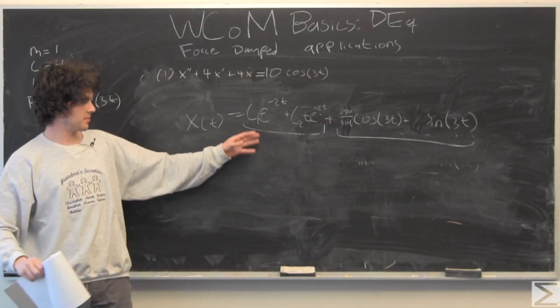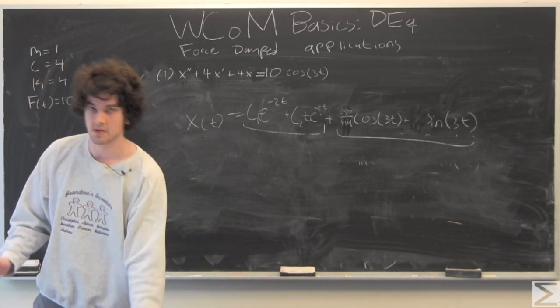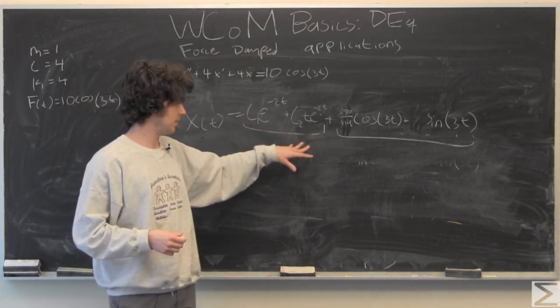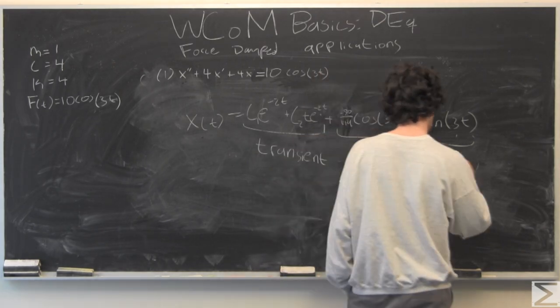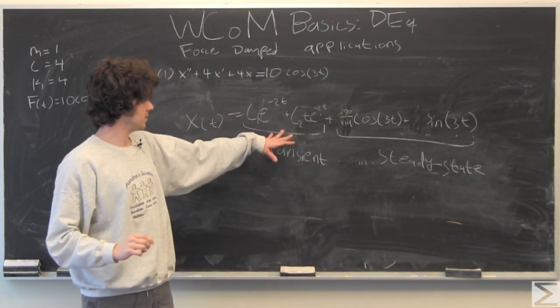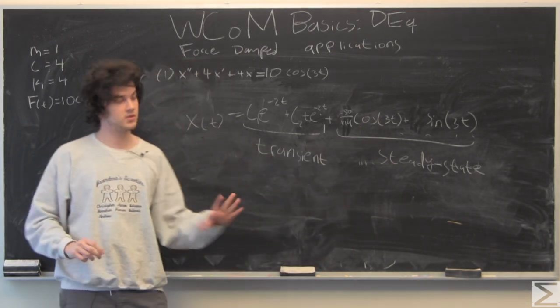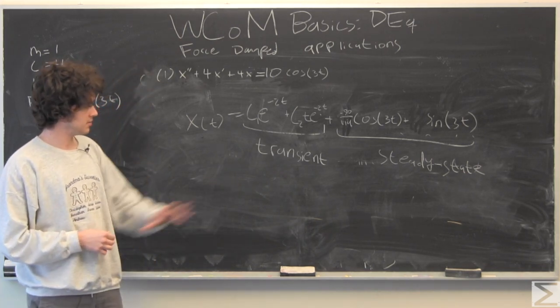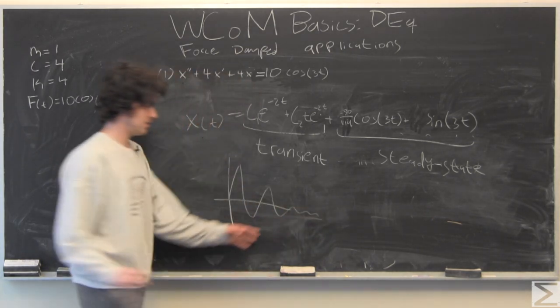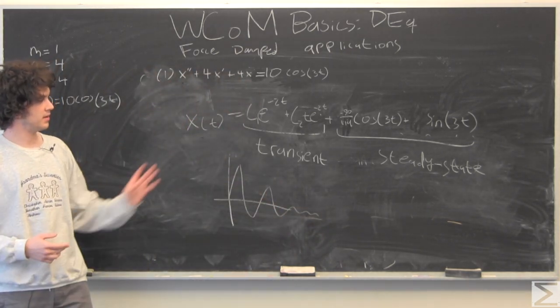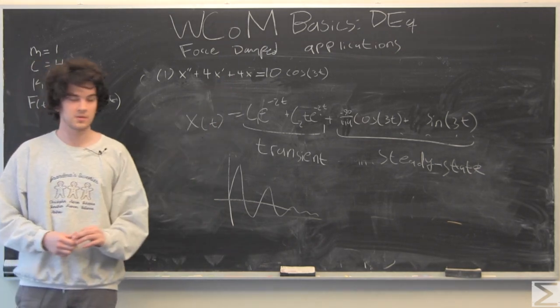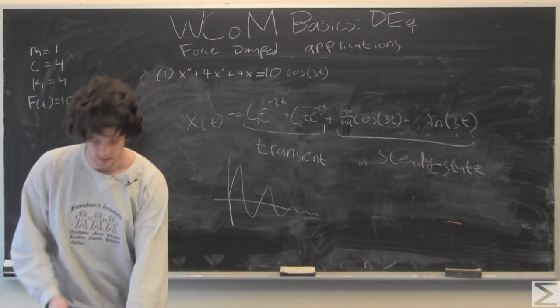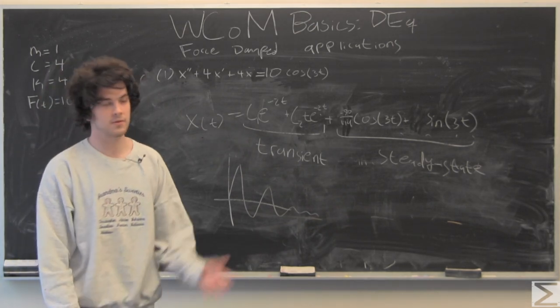So here we have x as a function of t is equal to our x complementary and our x particular. One thing to notice is we're going to look at end behavior. As t gets very big, this part is going to go to 0, this part is going to go to 0, and this part is just going to keep oscillating as sines and cosines do. So what we have is a transient and steady state part, and it's going to just damp off at the end because of this force damped oscillation. That's pretty much always going to happen - you're going to have a transient and a steady state part of your x as a function of t.